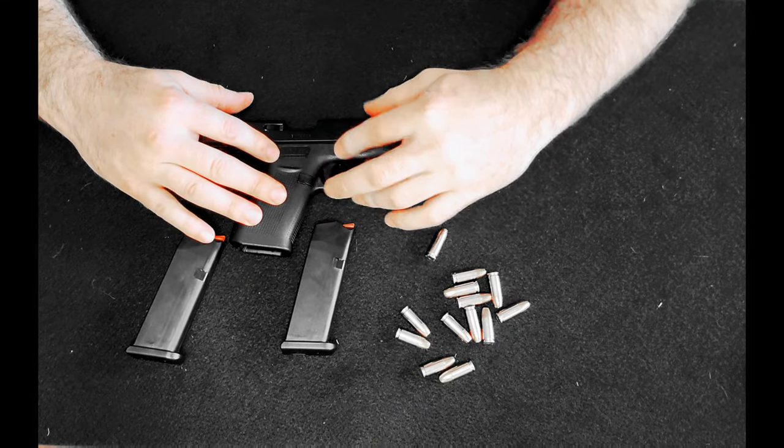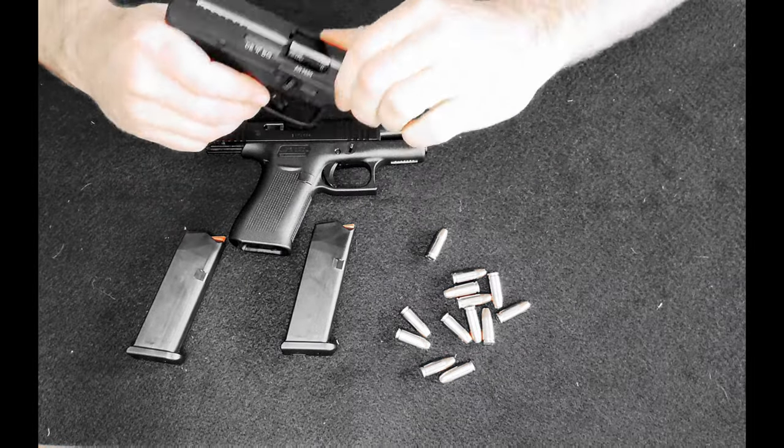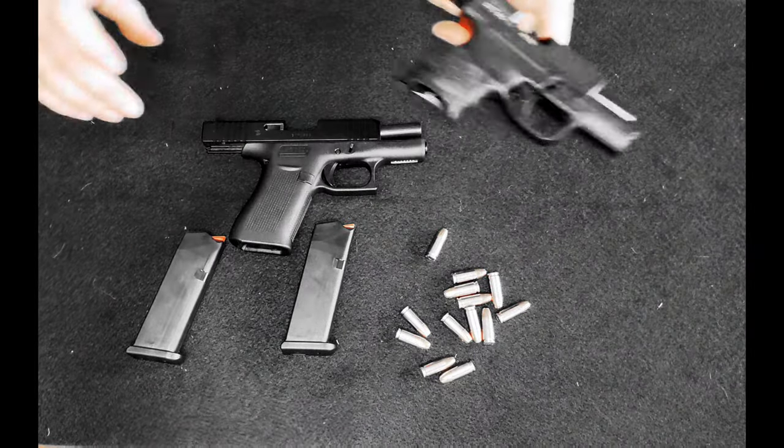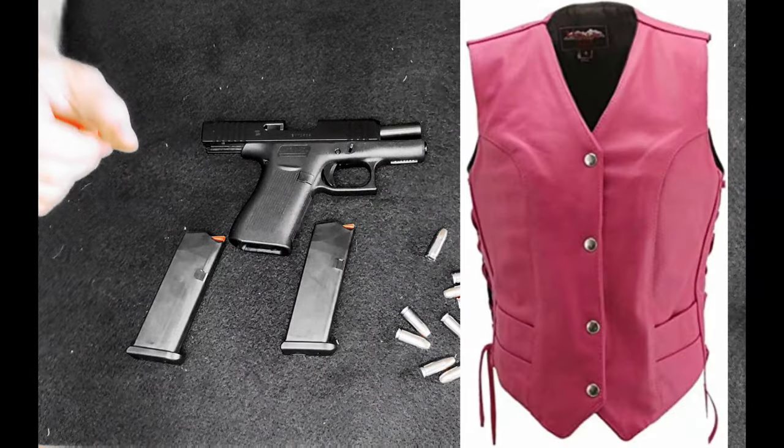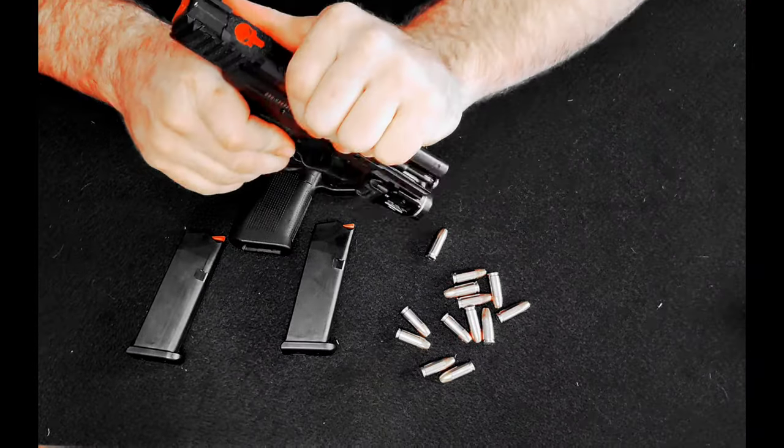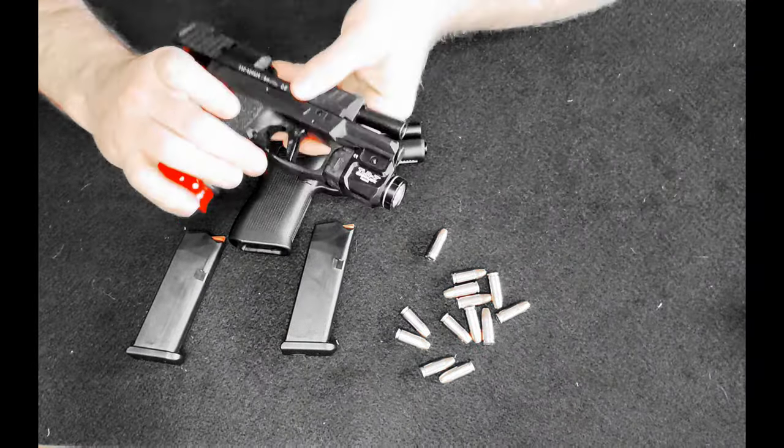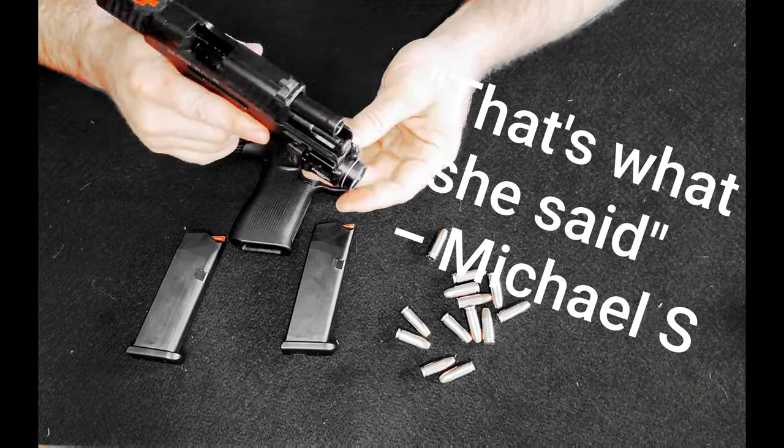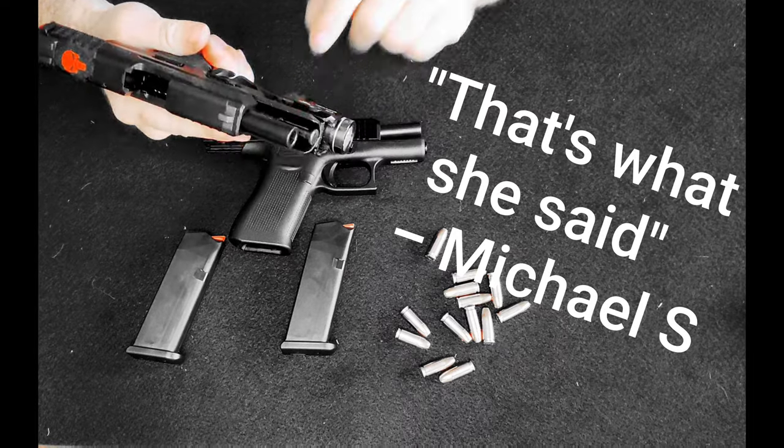This Glock 43X will be replacing my Walther PPS right here as my motorcycle vest conceal and carry pistol. My everyday carry is a HK VP9 SK but this is a little bit too big to fit inside of my motorcycle vest especially with a light on the rail.